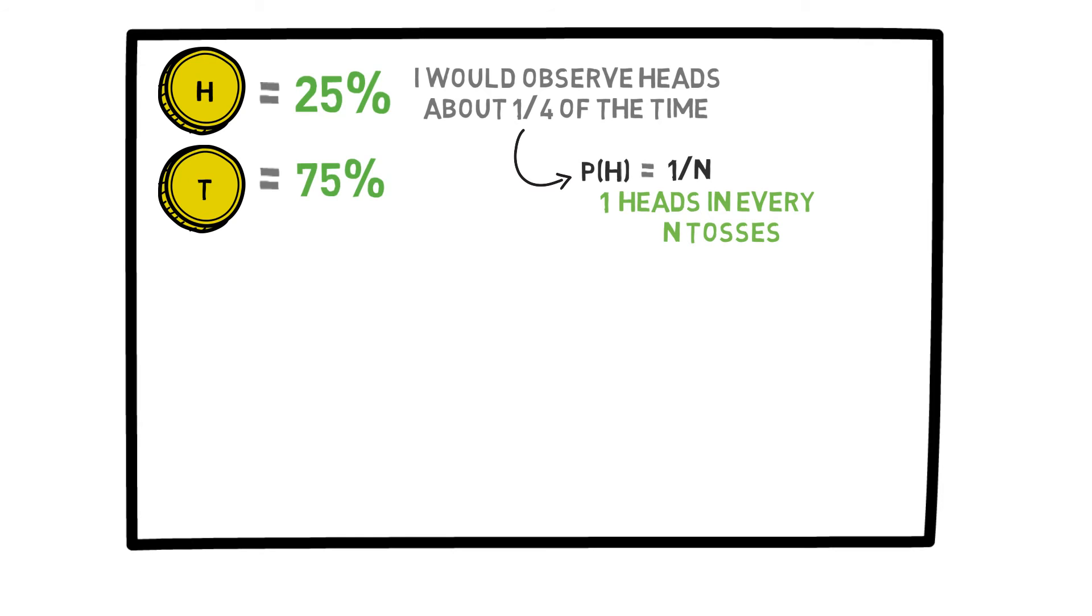If the probability of heads were 1 over 100, then on average, I would only observe 1 heads in a sequence of 100 tosses.